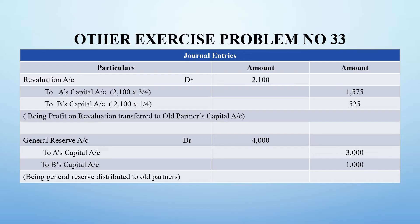The general reserve of 4,000 is split: 4,000 into 3/4 for A and 4,000 into 1/4 for B. Narration: distributed to old partners. You can use your own words for the narration.